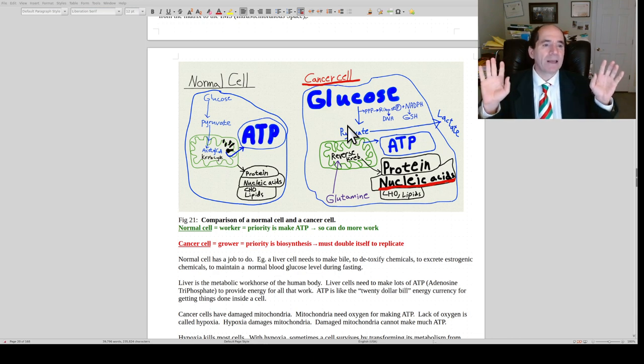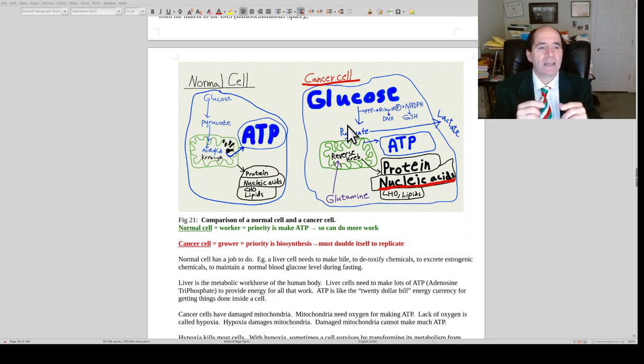A cancer cell is a cell that said, look, I'm not getting enough oxygen. I cannot make enough energy. I'm either going to die and go into apoptosis, or I'm going to just replicate as fast as I can and get the hell out of here. I'm going to go find an apartment somewhere else, metastasize to another location where there's more favorable living conditions. So a cancer cell, in order to double itself to replicate, it has to make a copy of itself, and so it needs to do a lot of synthesis. So this is totally different. Regular cell is a worker. It needs to make energy, ATP. Cancer cell is interested in just replicating, so it needs to make a lot of proteins, a lot of nucleic acids, as well as membrane lipids and whatnot.